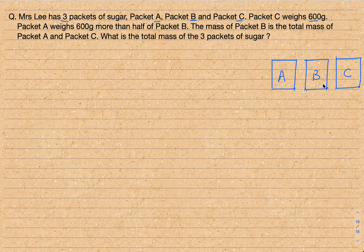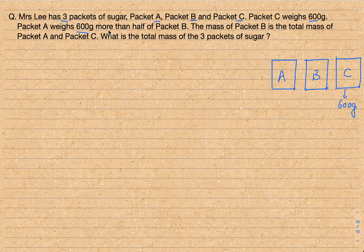I'm roughly drawing them of equal size but actually their masses are different. So let's say these are A, B and C. There are three packets and we know that the weight of packet C is 600 grams. We already know that this one is 600 grams. We also know that packet A weighs 600 grams more than half of packet B.